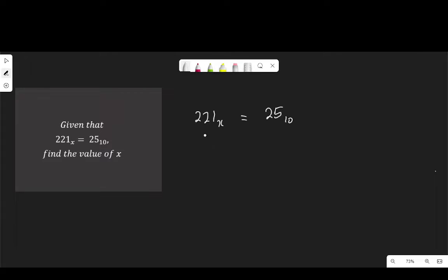The place value of 221 in terms of X will be the first number here. Let me write it X to the power of 0. The second one will be X to the power of 1. And then the last one will be X to the power of 2. Let me write the number under its arm 221.